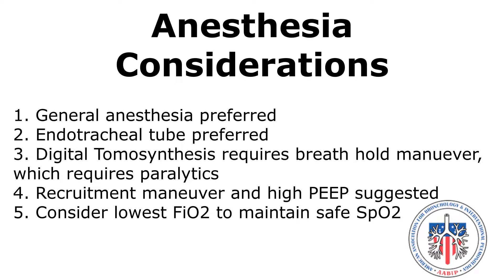Anesthesia considerations for Alumasight and peripheral bronchoscopy procedures in general include the following. General anesthesia is preferred to moderate sedation so the subsequent anesthesia maneuvers can be performed. An endotracheal tube is preferred for paralytic administration and to safely administer high PEEP. Paralytics are required because digital tomosynthesis requires a 20-second breath hold maneuver. While data does not show that a recruitment maneuver and high PEEP improved diagnostic yield, they may help prevent atelectasis. The lowest and safest FiO2 is recommended to prevent resorption atelectasis.